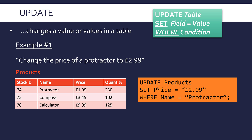Then you SET the price to be 2.99 — it's a value so put it in quotes. Then specify which record needs to change: I want just the protractor to change, so I'm saying WHERE name equals 'protractor'. Like with previous queries, the semicolon and putting clauses on separate lines isn't essential, but I think it helps readability.